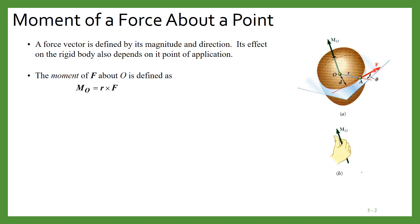Now the moment of this force, which is applied at A about O — O is the axis of this body — is defined as MO, where M is the moment and the subscript O represents the point about which we are calculating the moment.